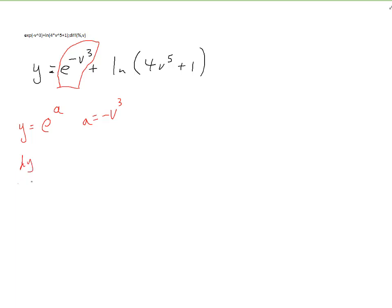So now I need dy/da. Differentiate y respect to a. That's the simple rule. It just stays the same. And da/dv is -3v². And then the final answer for this part differentiated is going to be dy/dv is this times this, e^a times -3v². But I have to remember that a, in fact, is equal to -v³.